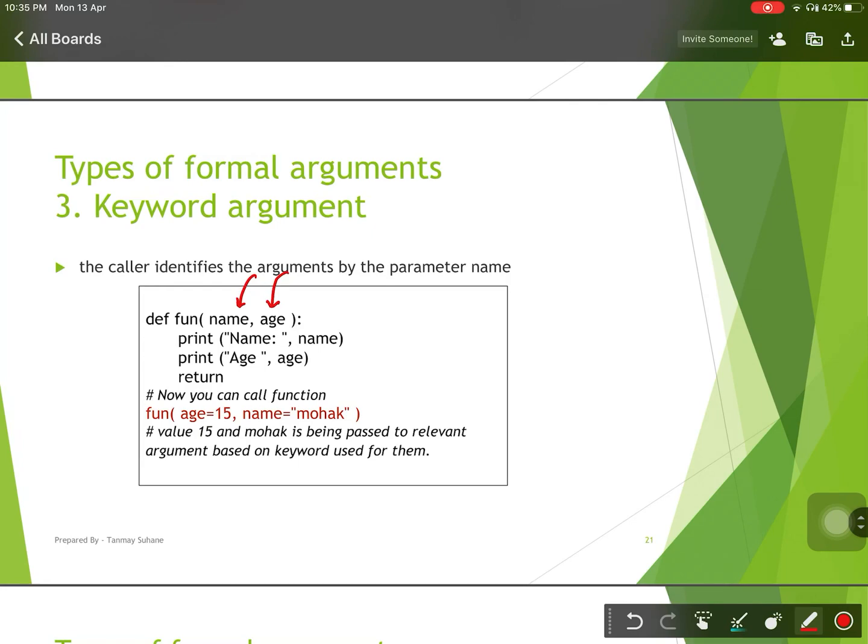If we don't know the order of arguments, but the name of arguments, so at the time of function call, we can assign the values to those arguments by their name. That is why it is called keyword argument.